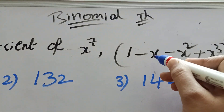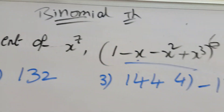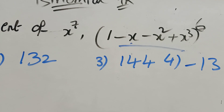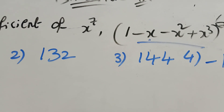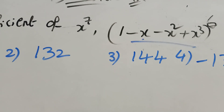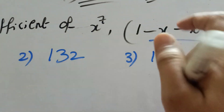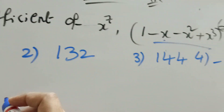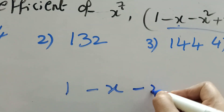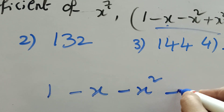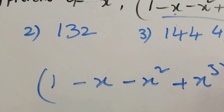The actual expression is 1 minus x minus x square plus x cube, whole power 6. I want to match this with the form (1 minus x) whole power n, so first I want to find the factors.